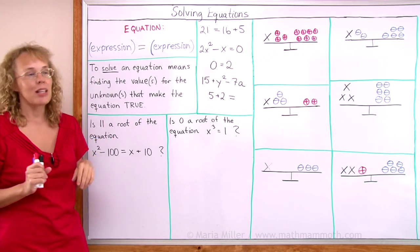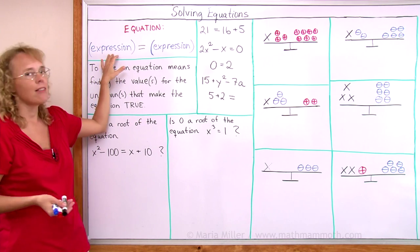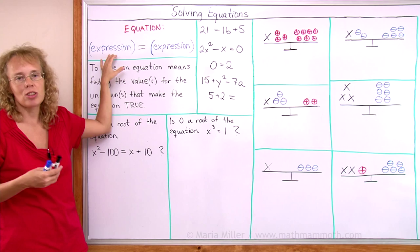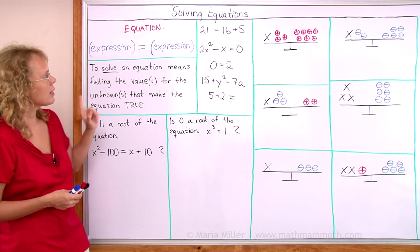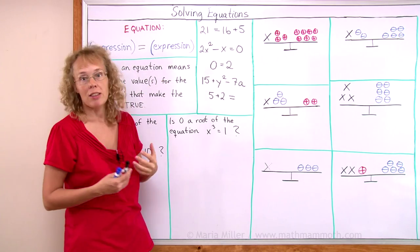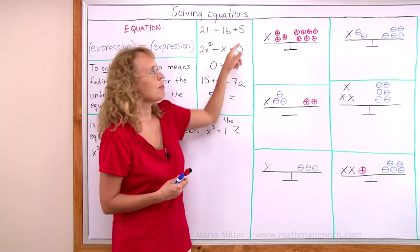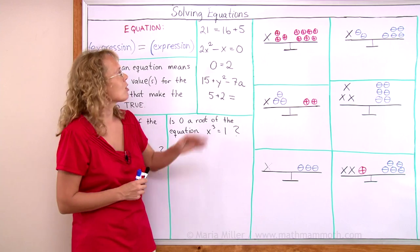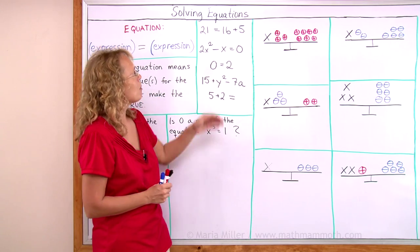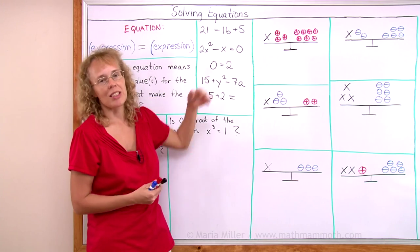And what was an expression? Well, expression is something where you have numbers, letters and mathematical operations such as addition and multiplication. Here are some examples of equations like this one for example. 21 alone is an expression and then this 16 plus 5 is an expression. So this is an equation and it is a true equation at that. Because 21 indeed is equal to 16 plus 5.